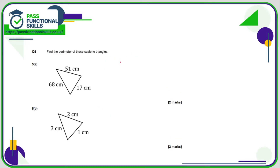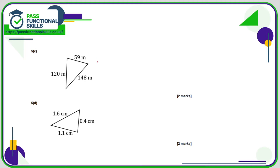We can use a calculator now. We just need to add three quite nasty numbers and that comes to 136 centimetres. This one you probably don't need a calculator: 6 centimetres. For C, you probably need a calculator — add these three numbers together and you get 327 metres. For D, use a calculator: 3.1 centimetres.